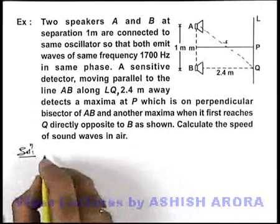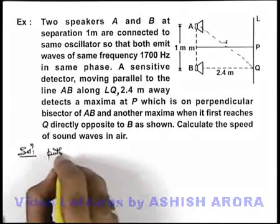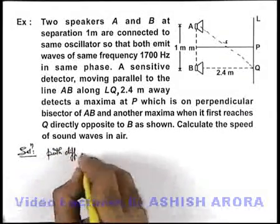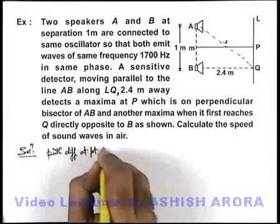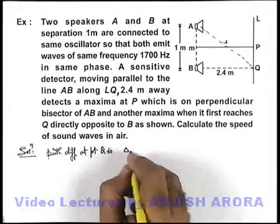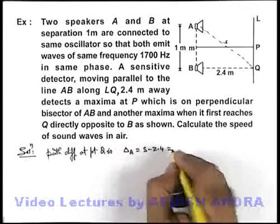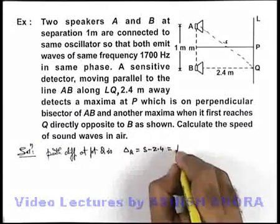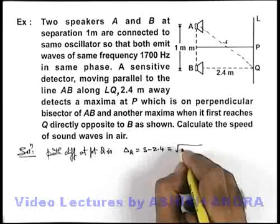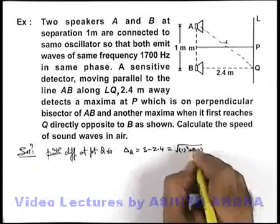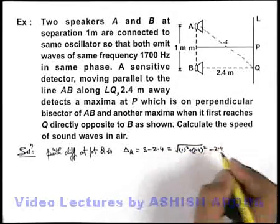So we can directly write path difference at point Q is delta Q can be written as s minus 2.4. And this s can be simply written as root of 1 square plus 2.4 square, minus 2.4.